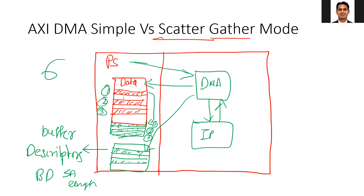Once the transfer is done, the CPU gets the completion information either via polling or via interrupt. In this case, the CPU doesn't need to configure the DMA for every transfer. You just tell the DMA: the descriptors are already prepared in this memory, go read and fetch the descriptors, and perform the corresponding transfers. The DMA is able to gather data from multiple non-contiguous memory locations, and CPU management becomes easier — you just need to tell the DMA where the descriptors are and say start processing.